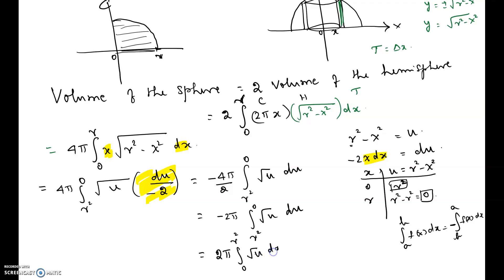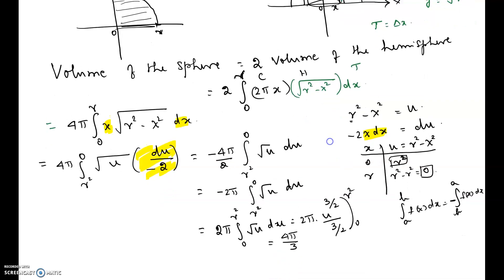That is 2π times the integral from 0 to R² of u^(1/2) du. Integrating gives u^(3/2) / (3/2), evaluated between 0 and R². This equals 4π/3, and then (R²)^(3/2) = R³, so the result is 4π/3 · R³. Therefore 4/3 πR³ is the volume of the sphere.